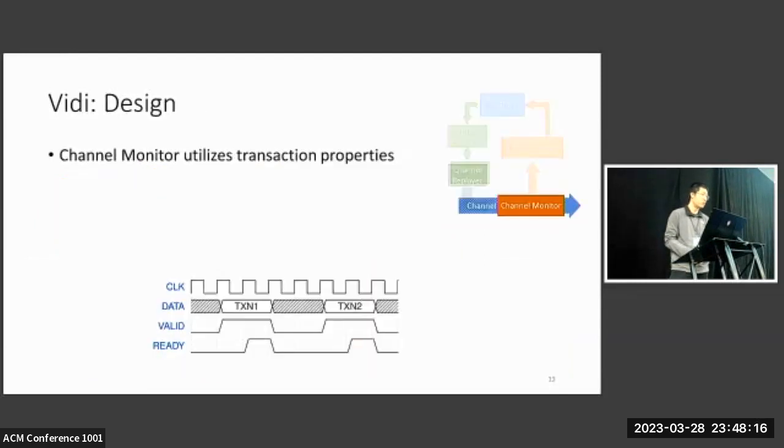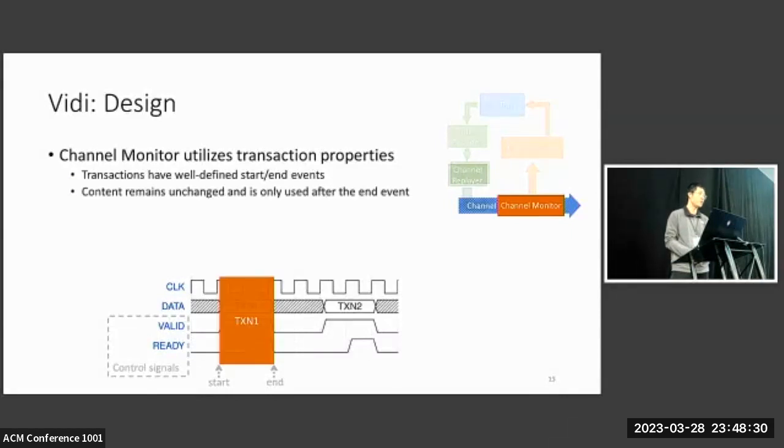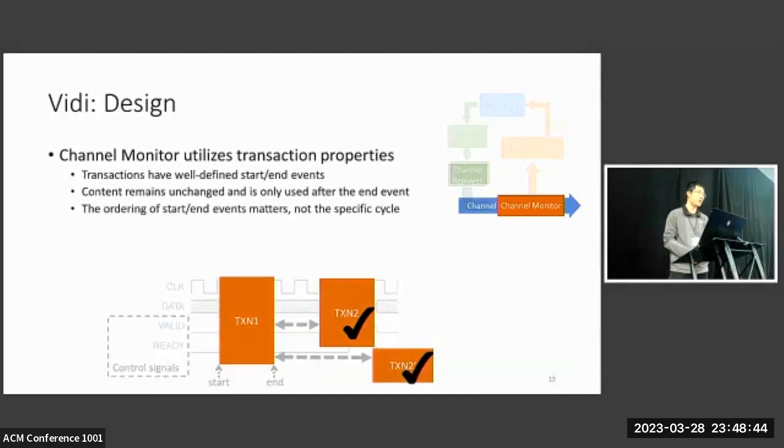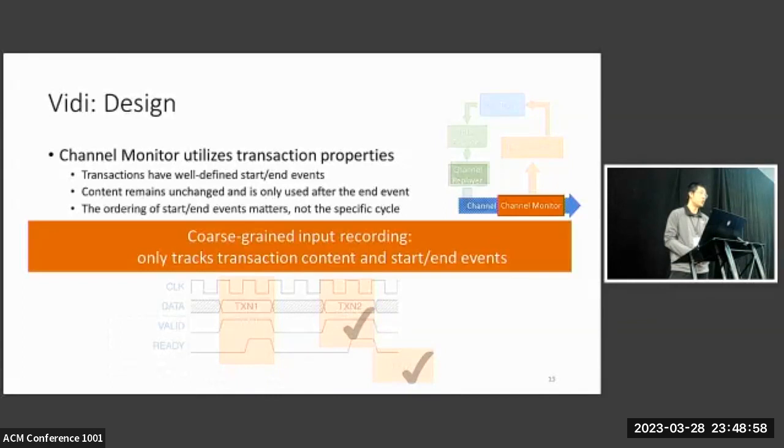So now let us take a look at each component. First, we have a channel monitor, which utilizes the following property to trace transactions. First, transactions have well-defined start and end events according to their control signals. And the content of the transaction remains unchanged and is only used after the end event. Such atomic-like property enables Vidi to represent signal changes at multiple cycles as a single transaction. The third property is that the ordering of start and end events matters, but the specific cycle does not. In this example, transaction 2 and transaction 2 prime are considered equally as long as they both happen after transaction 1 ends. In conclusion, Channel Monitor implements our first key idea, cross-channel input recording. It only tracks transaction content, start and end events.